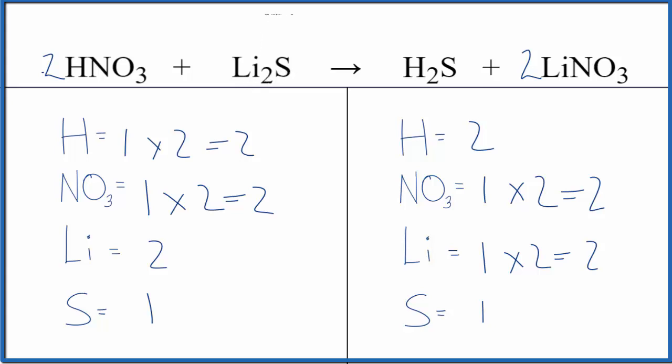If you wanted to write the states, they would look like this. Nitric acid, that's a strong acid. That's soluble. Lithium sulfide is soluble, although it would hydrolyze into LiOH and H2S. But still, we're going to just leave this as aqueous here. We have this H2S. This could be a gas. It could stay dissolved. So we could say it was aqueous.